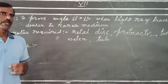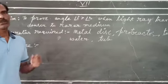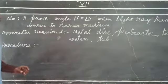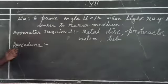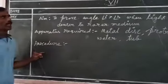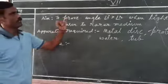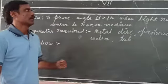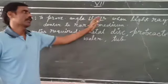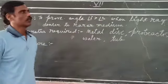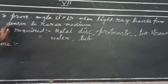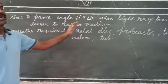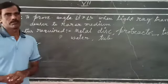In this video, we are going to discuss how to prove that the angle of incidence is greater than the angle of refraction when light travels from a denser to a rarer medium.